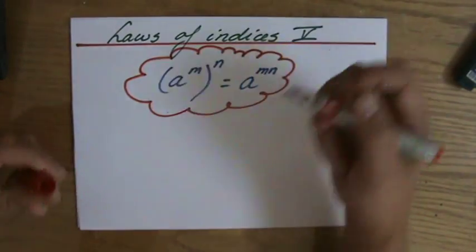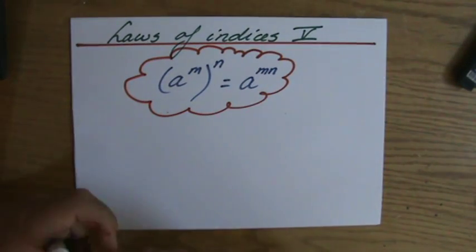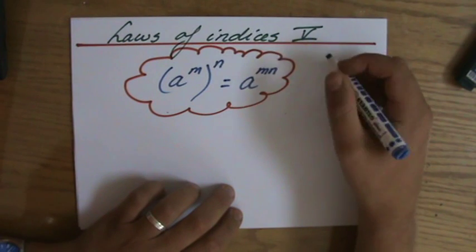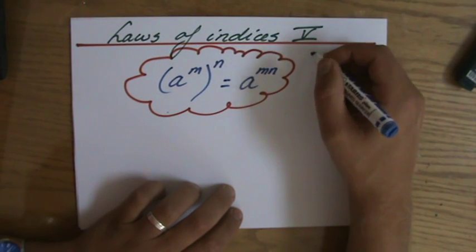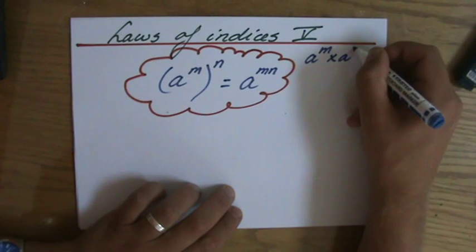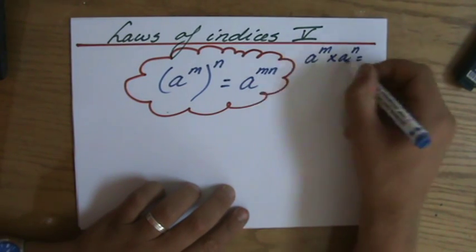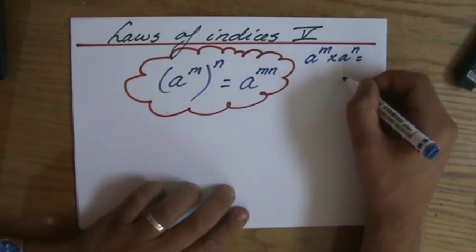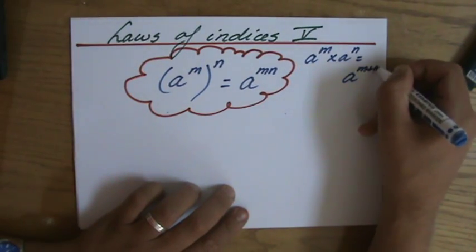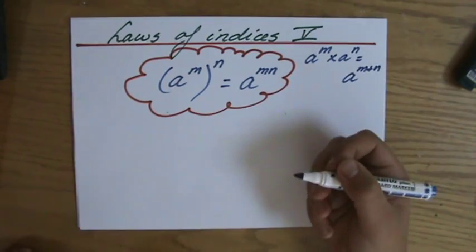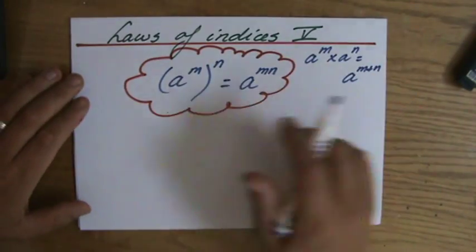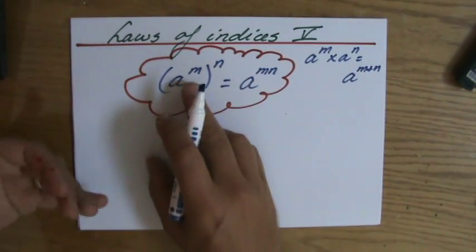It actually relates to the first law of the indices. Remember the first law: if I have a to the power m times a to the power n, where those bases are the same, the answer is a to the power m plus n. That was the first law. Now this is the third law.